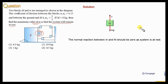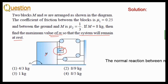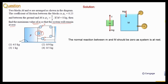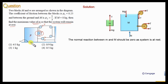Now consider the free body diagram of capital M. The weight of capital M, that is Mg, acts in the vertical downward direction. Since the string is light and inextensible, the tension in each part of the string is capital T — T here, T here, and T here as well. Normal reaction acts in the vertical upward direction, and friction force opposes the sliding tendency, so static friction on capital M acts in the leftward direction.